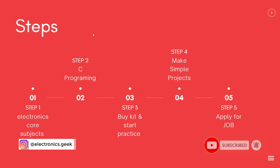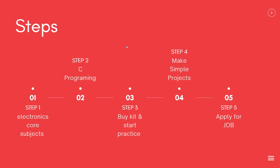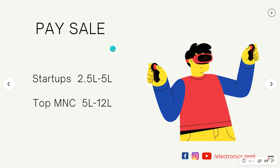The steps to become a good embedded engineer are: Step 1 — master your core subjects. Step 2 — master programming languages, both C and C++. Step 3 — buy a kit such as an Arduino or Raspberry Pi. Step 4 — make as many projects as you can; you can also take help from your professors to get project ideas. Finally, apply for jobs. Having a good number of projects in your resume will definitely help you get hired.